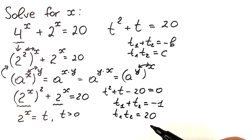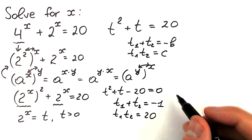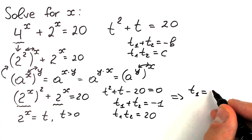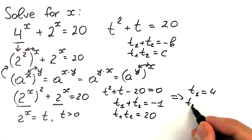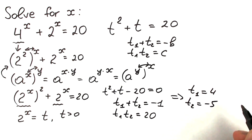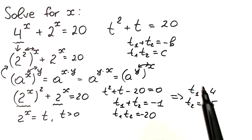Let's find the roots. The sum equals minus 1 and the product equals negative 20. We can find that t1 equals 4 and t2 equals minus 5. If we add them: 4 plus minus 5 equals minus 1 — correct. If we multiply: 4 times minus 5 equals minus 20 — correct. So our two roots are 4 and minus 5.